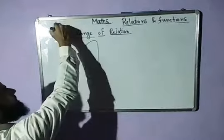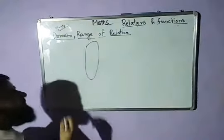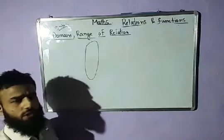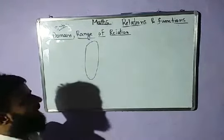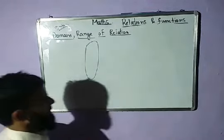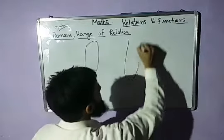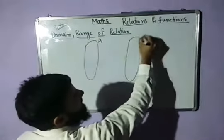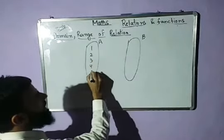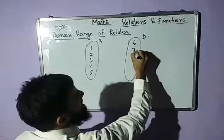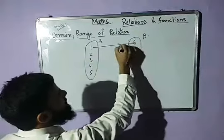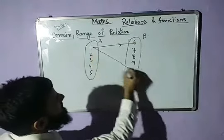Now let's discuss a very important topic — the domain and range of a relation. Let's suppose I have two sets: set A consists of one, two, three, four, five, and set B consists of six, seven, eight, nine, ten, eleven. Suppose one is related to six, and one is related to ten.